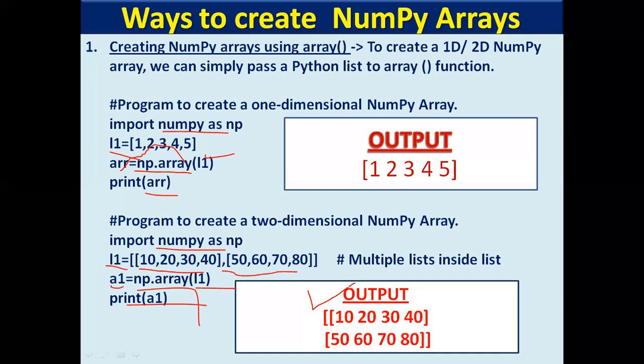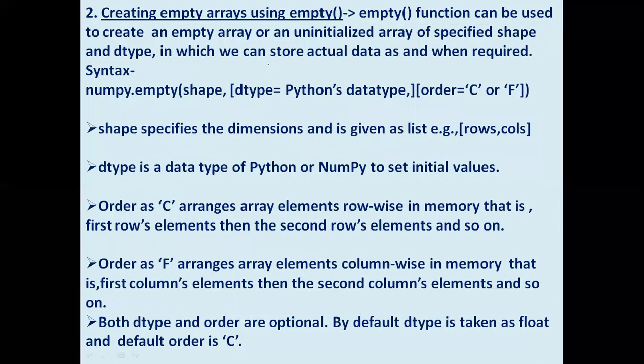Now we will go to see the next function. The second function is creating an empty array using the empty function. The empty function can be used to create an empty array or an uninitialized array of specified shape and data type. We can create an empty array — that means an array without values — or an uninitialized array.